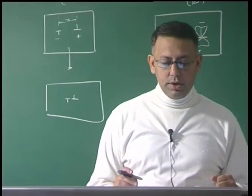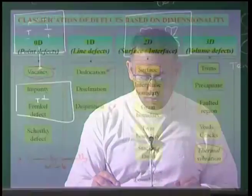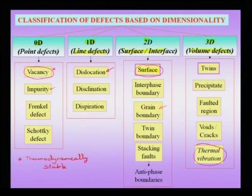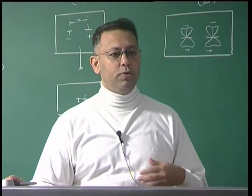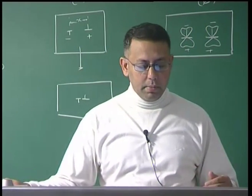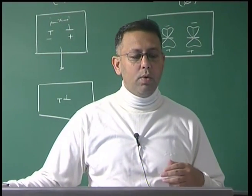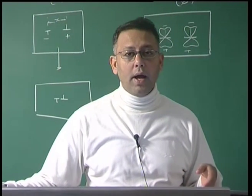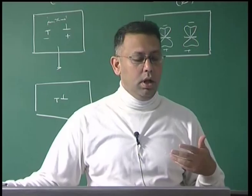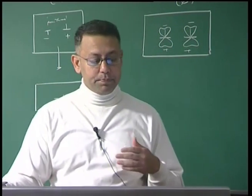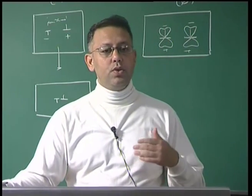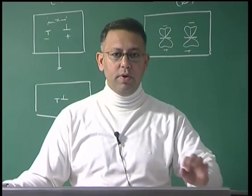Other important zero-dimensional defects are what we casually call impurities — substitutional or interstitial atoms. Though we are talking about defects, these could be intentionally added to improve properties; for instance, in steel we add carbon to increase hardness. A second atom added beneficially should be called an alloying element rather than an impurity. Other defects in ionic materials include the Frenkel defect and the Schottky defect, which we may briefly consider as we go along.